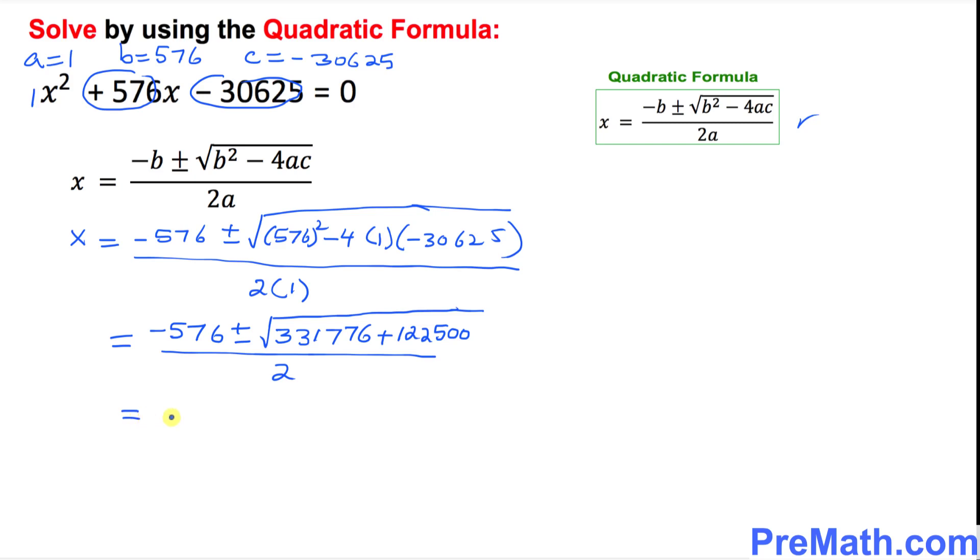Let's simplify more. Negative 576 plus or minus, when you add these two big numbers, we're going to get 454276 divided by 2. So far, so good.